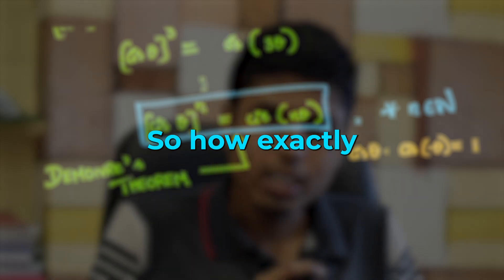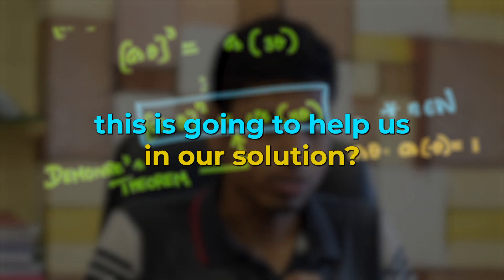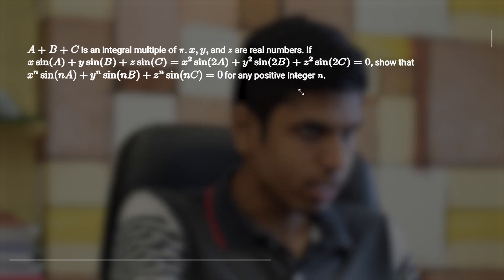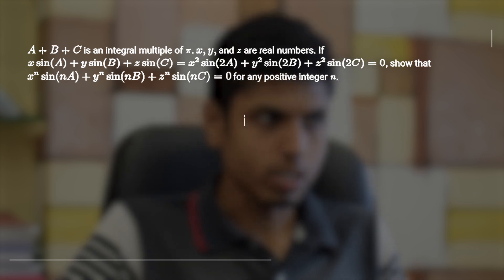Hello everyone, today we will see a connection between trigonometry and complex numbers. Complex numbers are going to help us analyze trigonometrical equations through De Moivre's theorem. Let's learn it through a problem. We will first start with the problem and eventually prove the theorem and reach a conclusion. Let's get into the video. Here is the problem we are going to solve today, through which we'll learn some application of complex numbers in trigonometry.